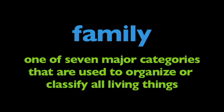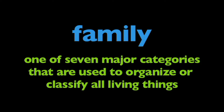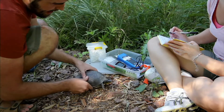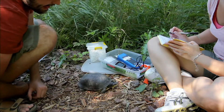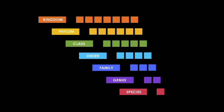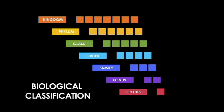In this program, we're going to learn about family. Family is one of seven major categories that are used to organize or classify all living things. Biologists have classified and divided all living things into a series of categories. There are seven categories, or biological classifications.